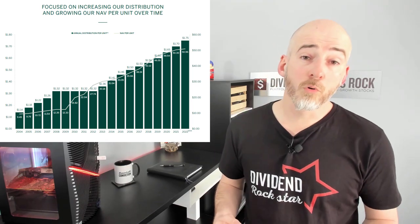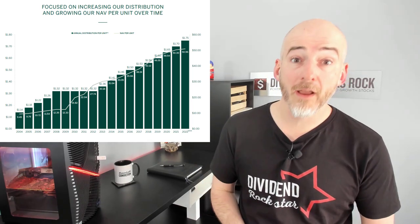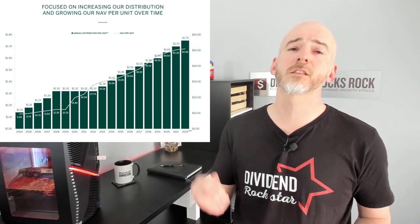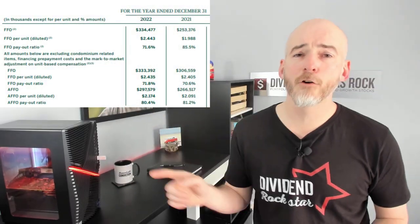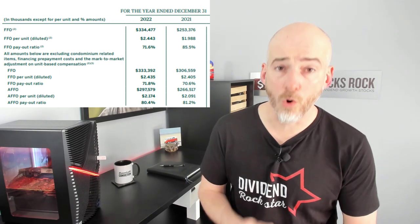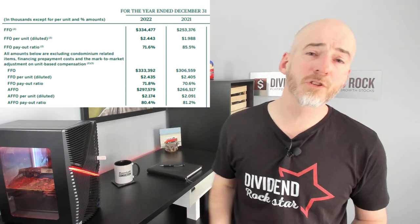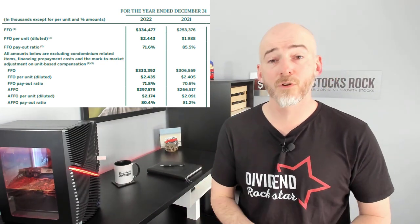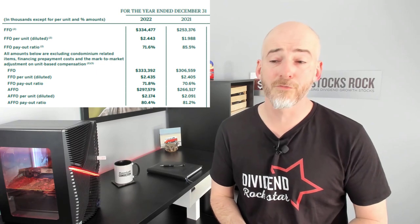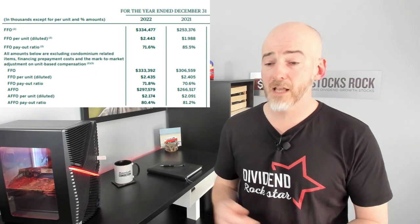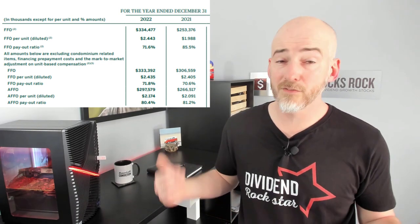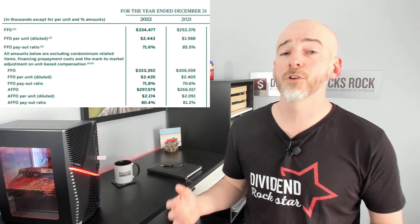Now, super important — let's look at the FFO payout ratio to make sure everything is in order and the company will be able to increase its distribution in the future. As you can see, both the FFO and the AFFO payout ratios are well in order. The FFO payout ratio is 72% for 2022 and the AFFO payout ratio is 80%, versus 70% and 81% respectively for 2021. So basically pretty stable, even as they continue to increase their distribution.